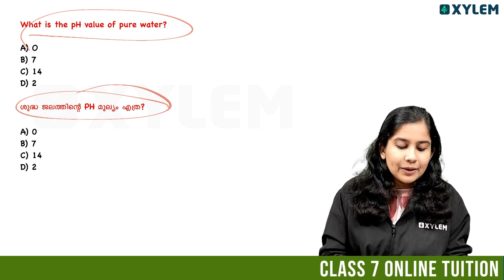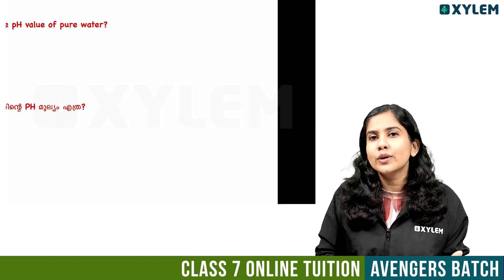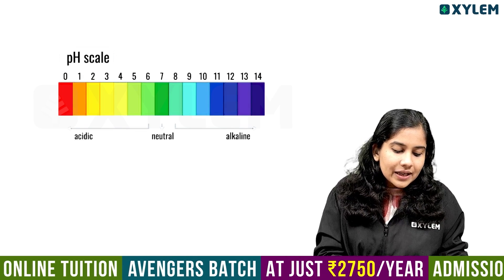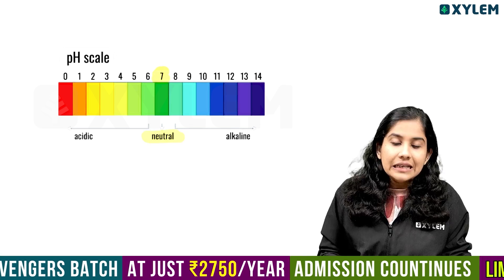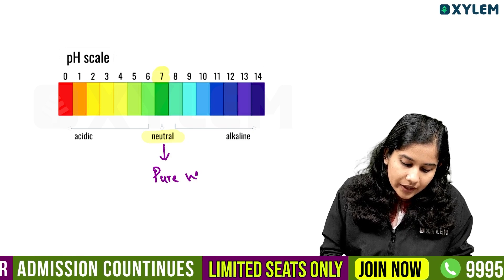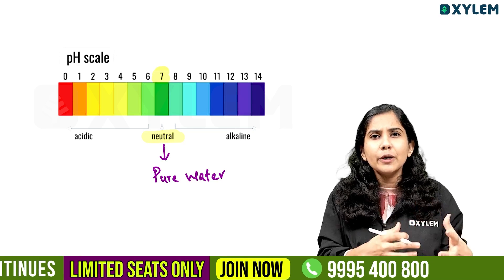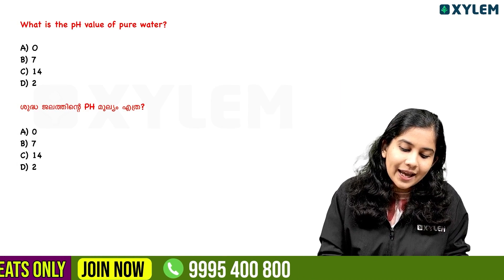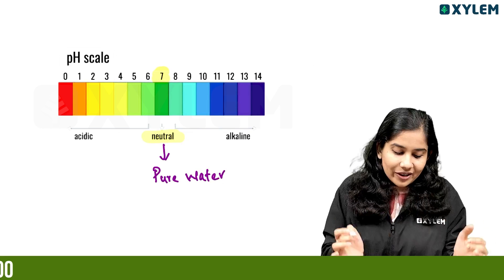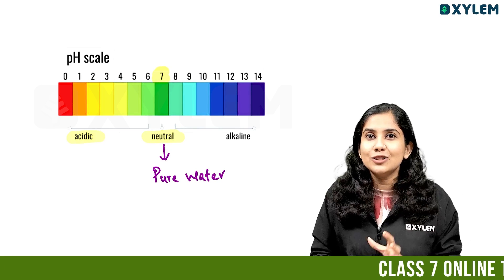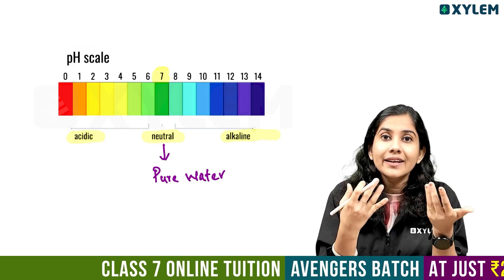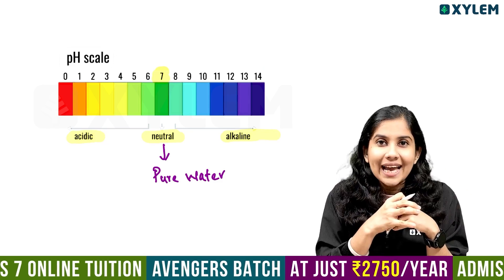What is the pH value of pure water? Using the pH scale, pure water has a pH of 7. pH 7 is neutral — neither acidic nor basic. Below 7 is acidic; above 7 is alkaline or basic.